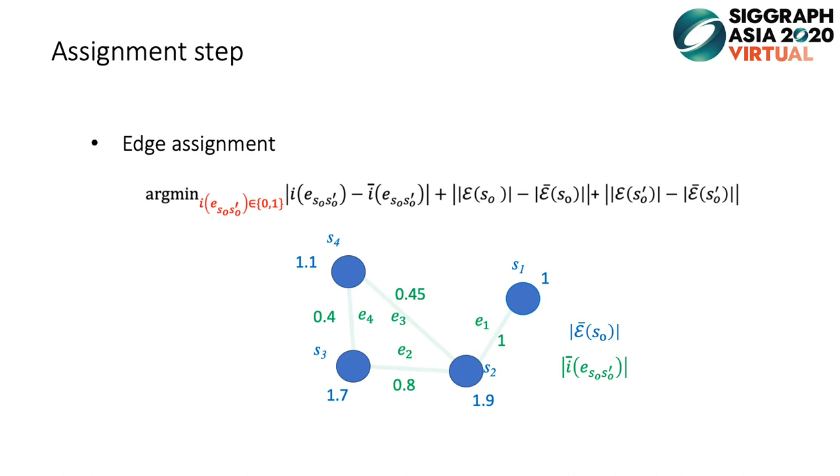Here, we show you an example. We start from the edges with the highest expected existence confidence, which is E1 here. After some computation, we find E1 equals 1 can result in smaller energy. This process is iterative until all edges are computed. Finally, the graph has edges E1, E2, and E4.